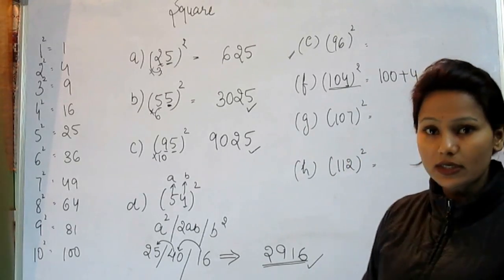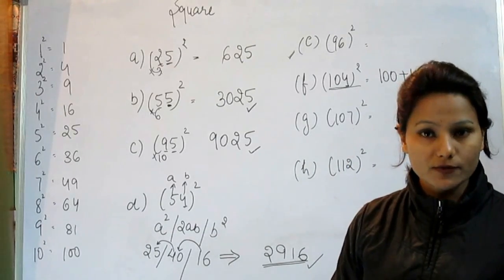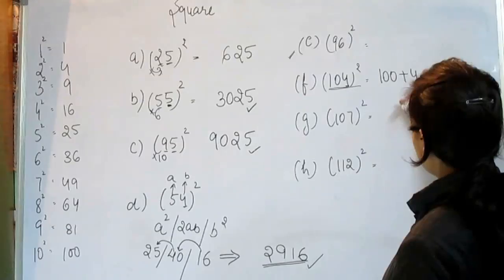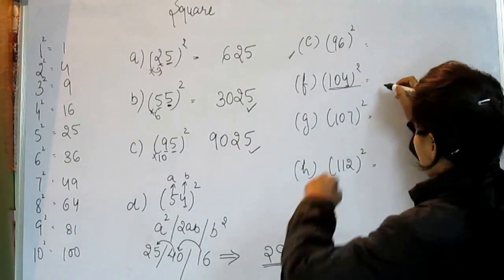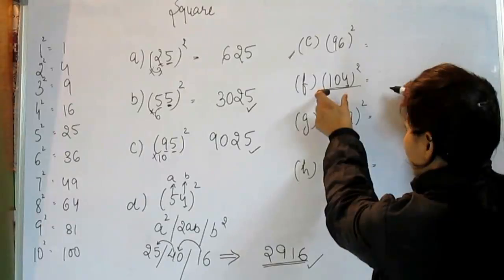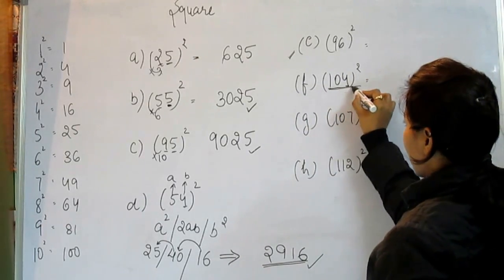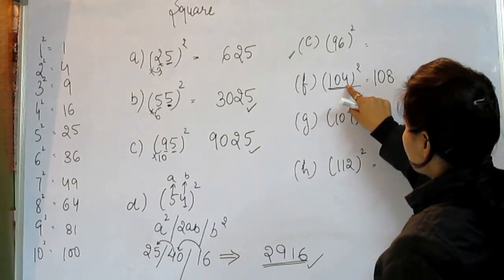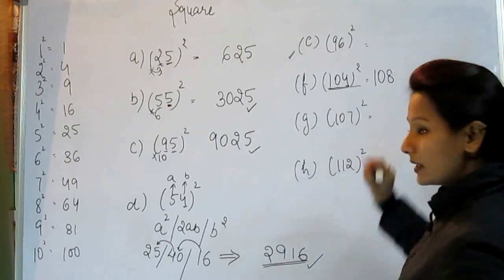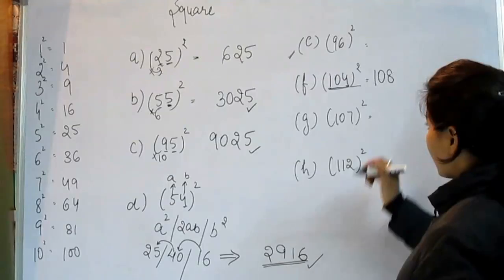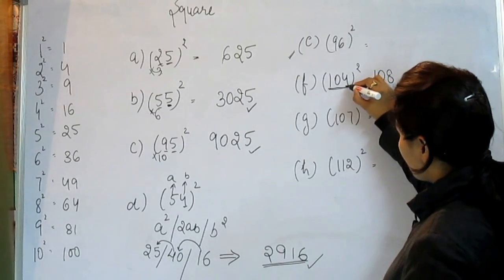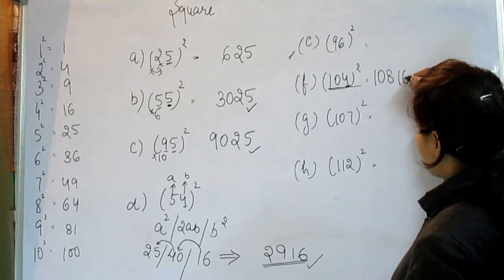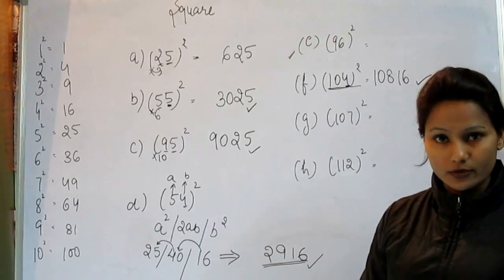104 is equal to 100 plus 4. So what you have to do is add this 4 with the entire number. When you add this 4 with the entire number you get 108. And then what is the square of this number? That is 16. And this is the answer.